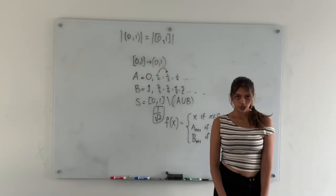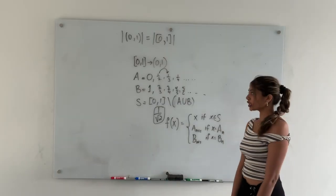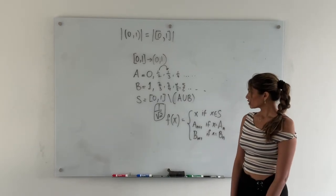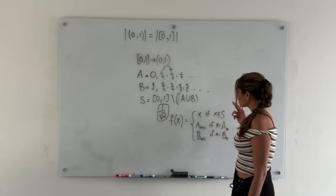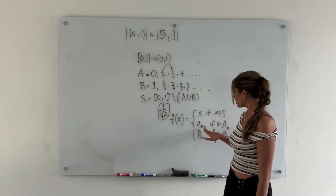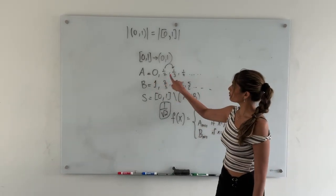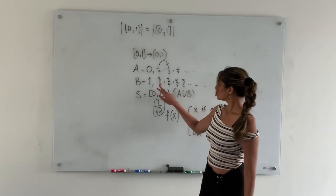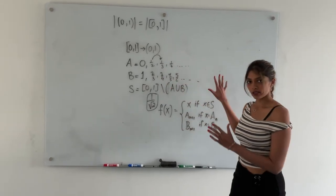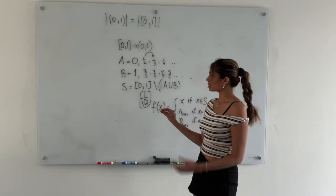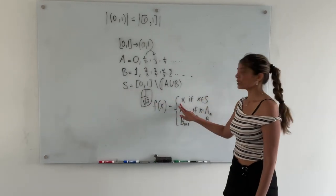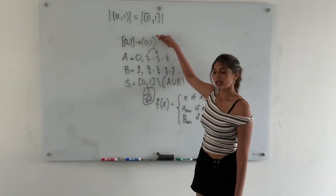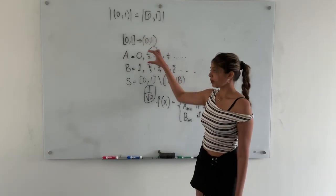Let's go over why this is a bijection. Remember that to be a bijection, it needs to be both injective and surjective. The function is surjective because everything in the open interval (0, 1) is mapped to. So 1/2, 1/3, 1/4 each have something mapping to them; 2/3, 3/4, 4/5, 5/6 — everything has some element mapping to it. And everything in s has itself mapped to it. So everything in (0, 1) is hit, since nothing maps to 0 and 1.